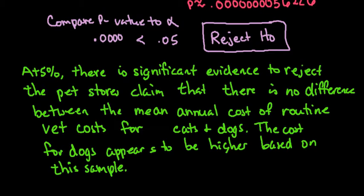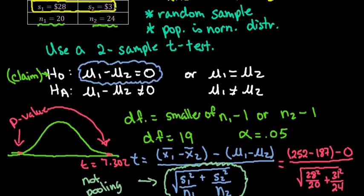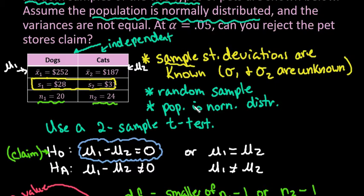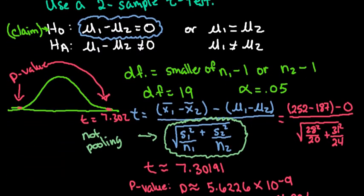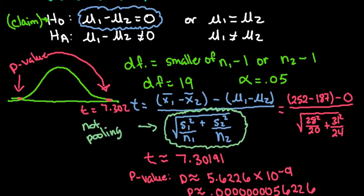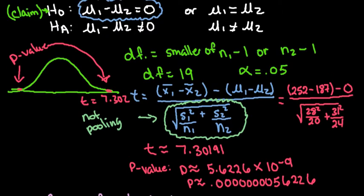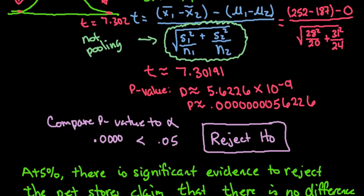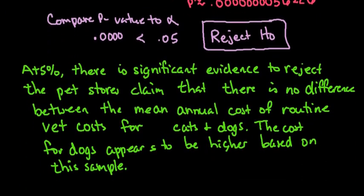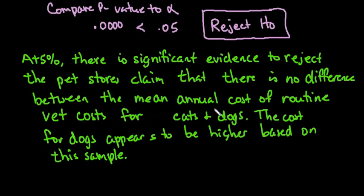To recap: for any hypothesis test, start with the conditions for the test, set up your null and alternative hypotheses, draw your picture, and decide whether you're using a p-value approach or a rejection region. I use the p-value approach when using technology and the rejection region when not. Show your work, compare the p-value to alpha, and interpret your decision in context. Thanks for watching — if you have questions or need additional topics covered, please let me know, and if you get a chance I'd really appreciate it if you would subscribe.